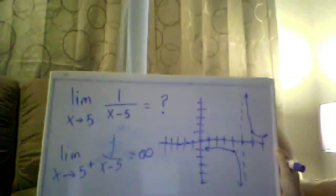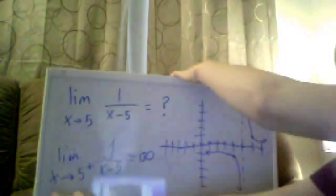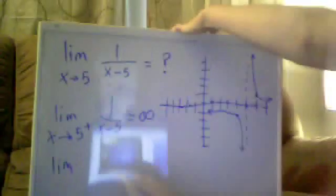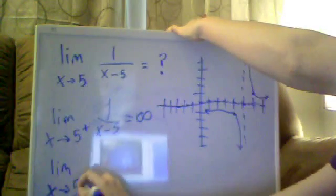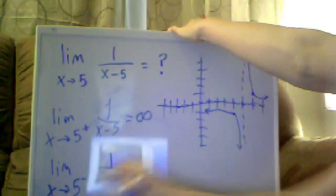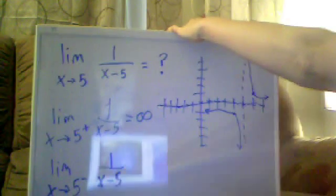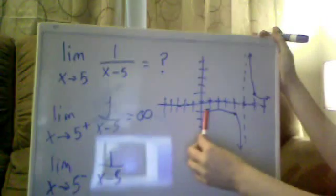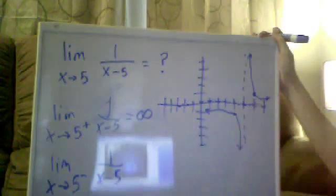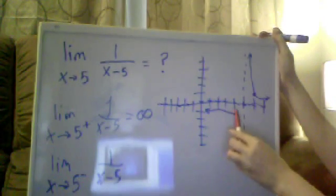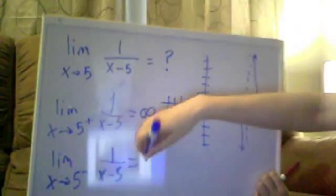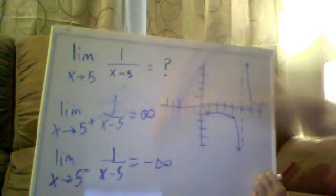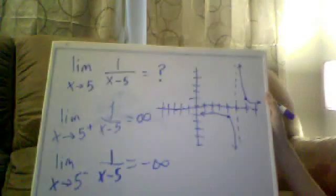Then if I do from the other direction — the limit as X approaches five from the negative direction of my function — I'm talking about approaching from the left. If I approach from the left, which is the negative direction, my graph is going down to negative infinity. So this equals negative infinity. That's how we break that down.